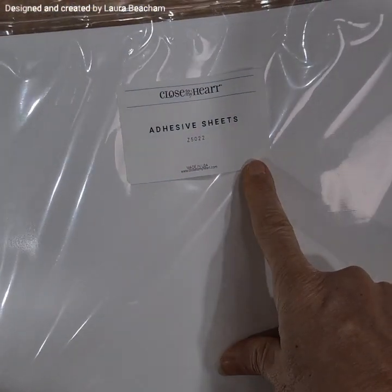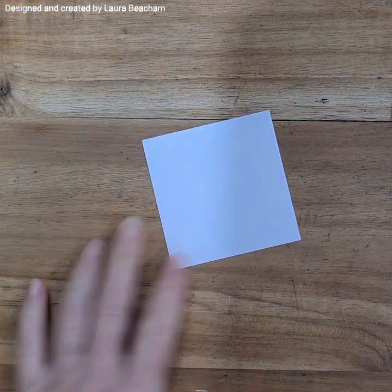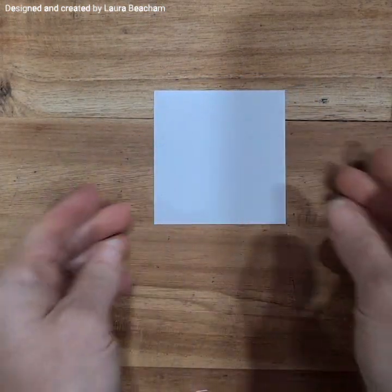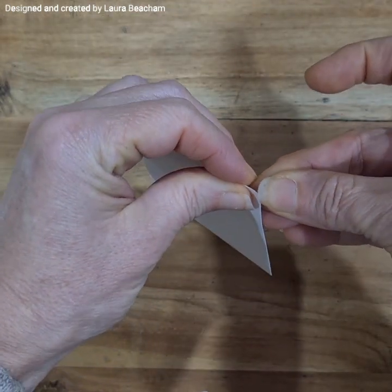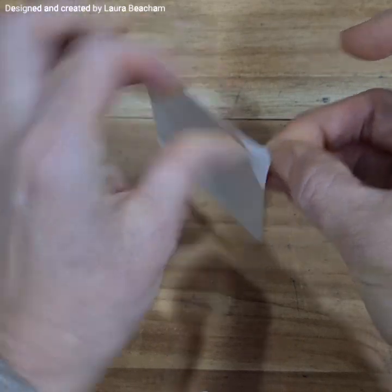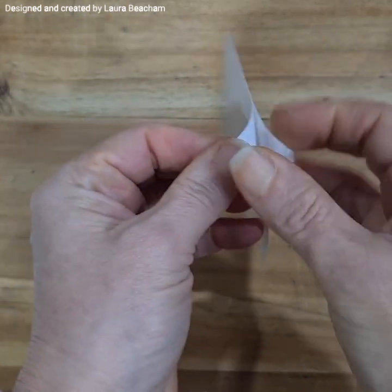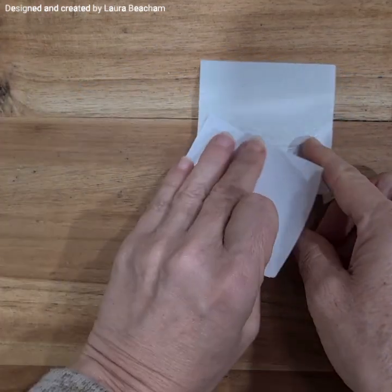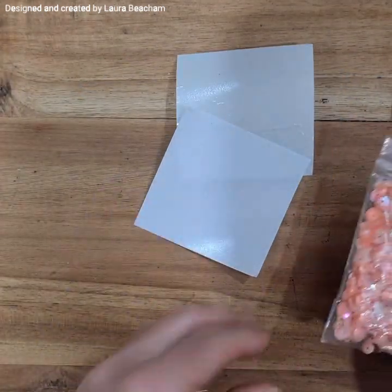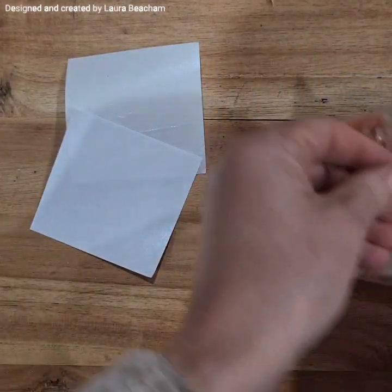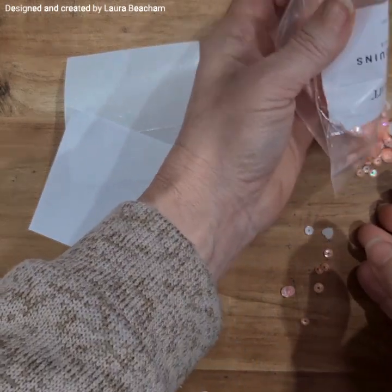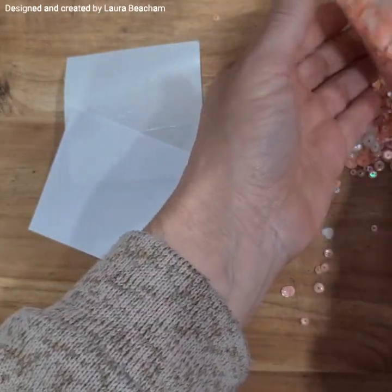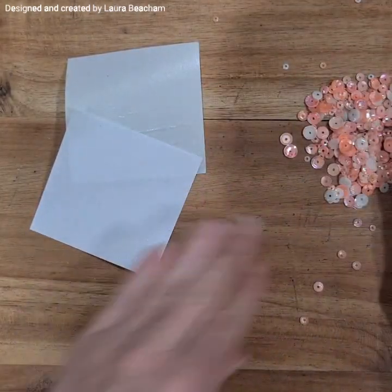First of all, you're going to need adhesive sheets from Close To My Heart. These are also known as tack paper in other parts. We're going to cut a piece out at two and three quarters by two and three quarters for this exact project. Once you've learned the concept, you could easily go ahead and experiment. I'm going to remove part of it and bring in a bag of sequins. These are the melon sequins. I'm going to tip out a pile onto my workspace.